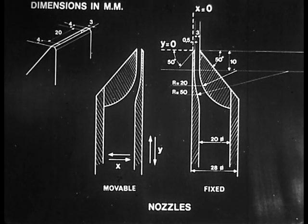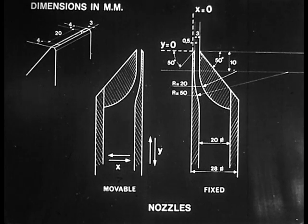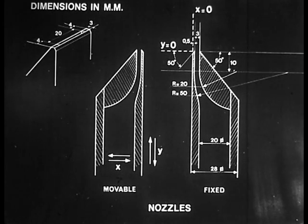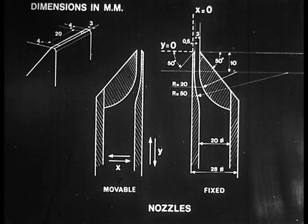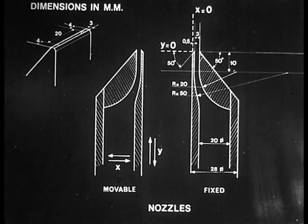This shows a schematic representation of the two nozzles. The right hand nozzle is fixed while the left hand one can be moved horizontally and vertically. Note that the inner facing walls of the nozzles are vertical so that they can be brought into close contact.